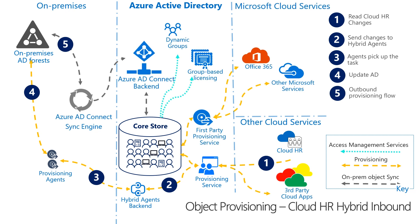Once Susie is on the on-premises Active Directory, the rest of the steps are exactly the same as the outbound provisioning flow in step five. If the full cycle of provisioning to applications results in object changes — for example, the email address being assigned after provisioning the mailbox in Exchange Online — then the provisioning service can write the changes back to the cloud HR system, as we can see here in step six.